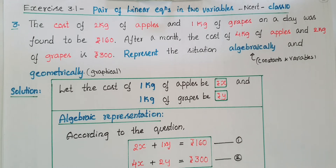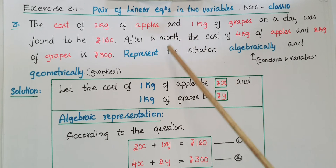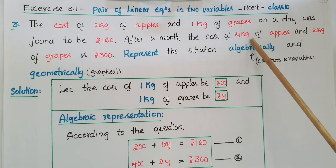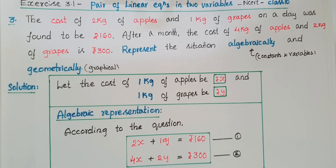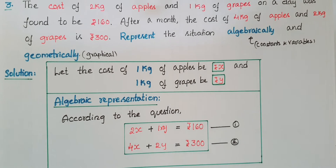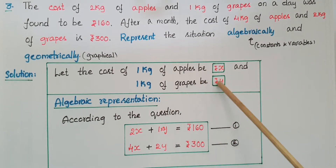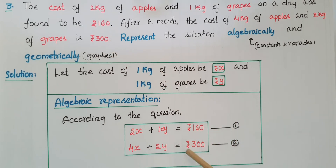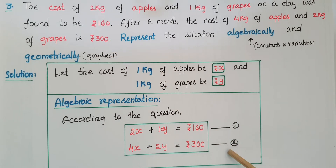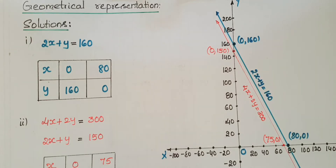The second equation: after a month, the cost of 4 kg of apples — since 1 kg is x rupees, 4 kg is 4x rupees. Then 2 kg of grapes: since 1 kg is y rupees, 2 kg is 2y. So 4x + 2y = 300 rupees. This is the second equation.